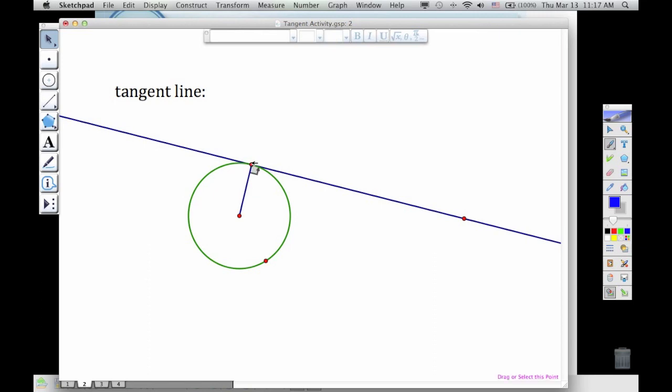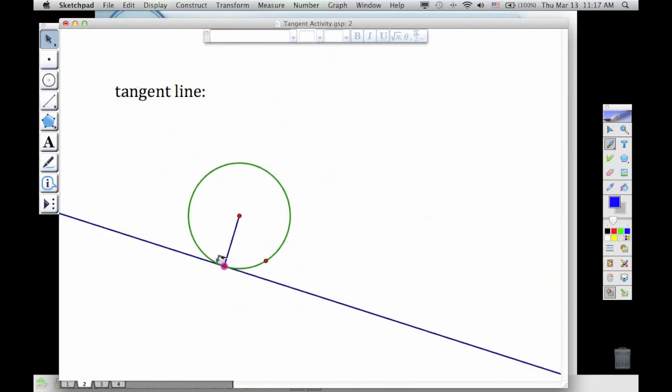And so we can define that tangent line as the line that is perpendicular to the radius of the circle, and then that will always be a 90 degree angle there.